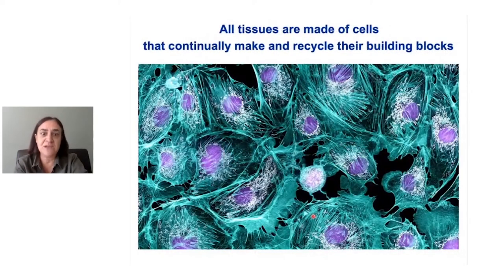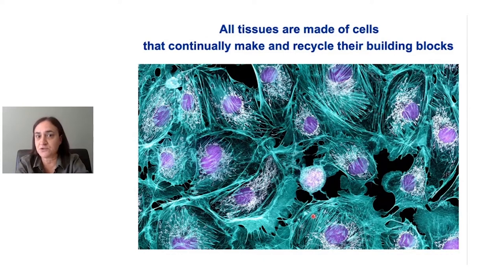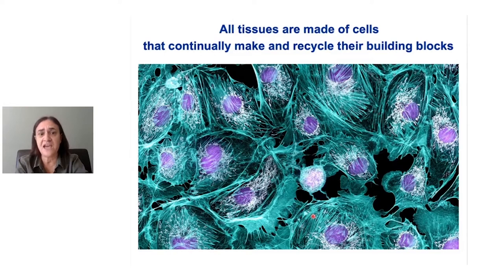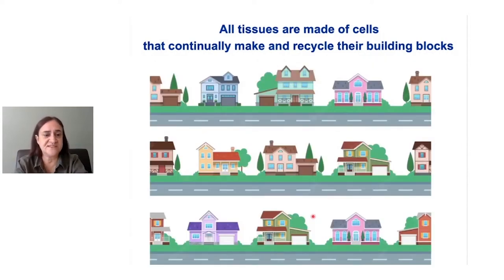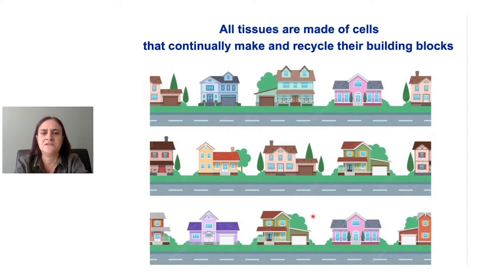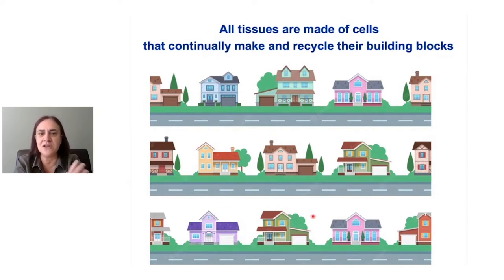All of our tissues are made up of many different kinds of specialised cells — some are specialised to help us see, some to transport blood around the body. Despite all their different functions, cells have some properties in common. One common feature is that they all make new building blocks, and when they don't need them anymore, they break them down and recycle them. You can think of cells in a tissue as being houses in a neighbourhood — within each house there are similar processes going on, like cooking, cleaning, perhaps some DIY to refresh the kitchen, keeping the house refreshed and everything in the right place at the right time.